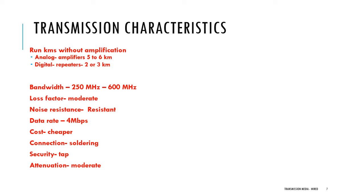Now let us see the transmission characteristics of twisted pair. Twisted pair helps to transmit signals kilometers without amplification. But in case of analog signals, amplifiers are placed every 5 to 6 kilometers. In case of digital transmission, repeaters need to be placed every 2 or 3 kilometers. The bandwidth supported is in the range of 250 MHz to 600 MHz.